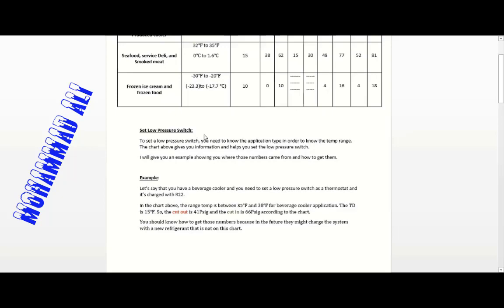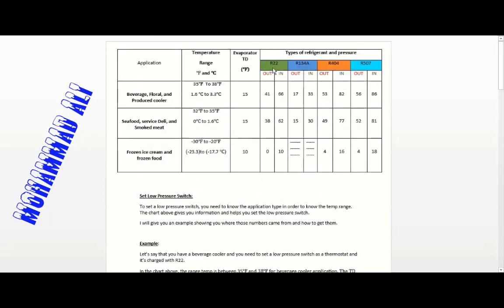Here I have R22 as an example, with the application of cooling beverages. To cool beverages, we set the temperature between 35°F and 38°F (1.6°C to 3.3°C), with a TD of 15. For R22, the cut-out is 41 PSI and the cut-in is 66 PSI, so you can simply follow the chart to find those values.